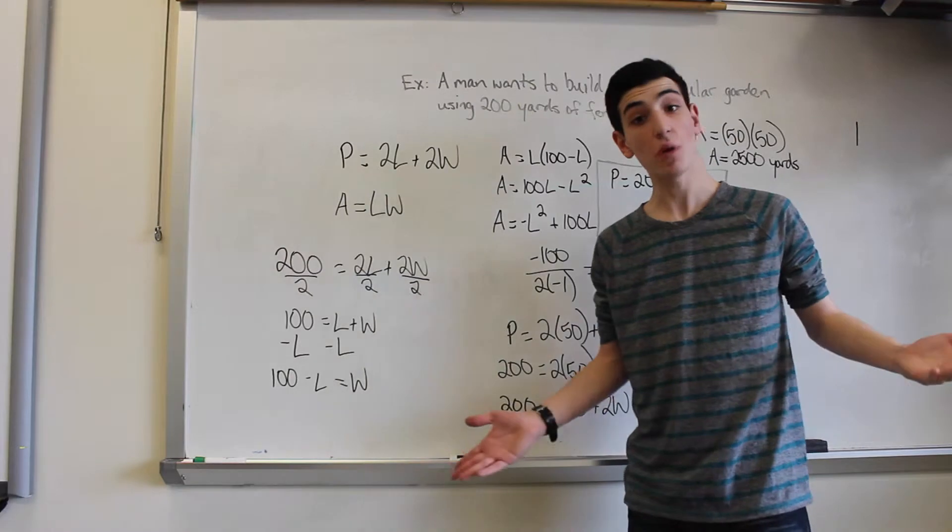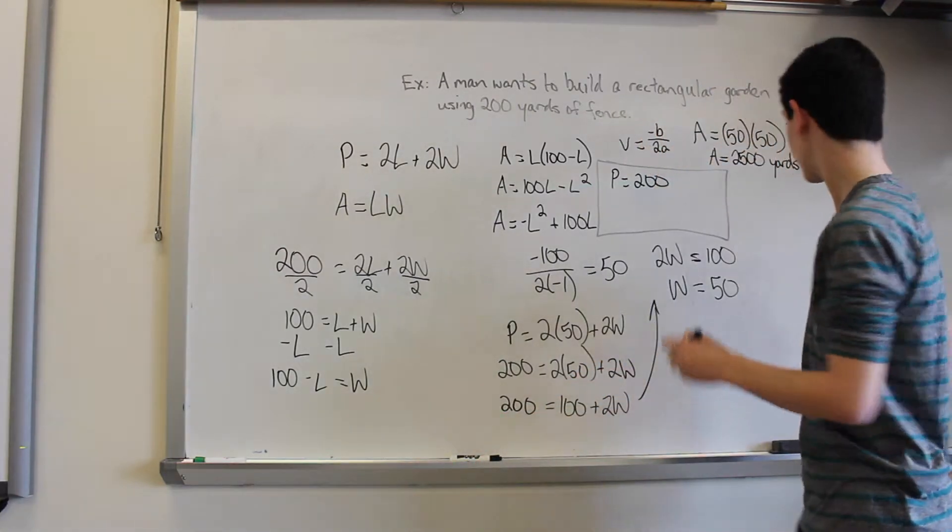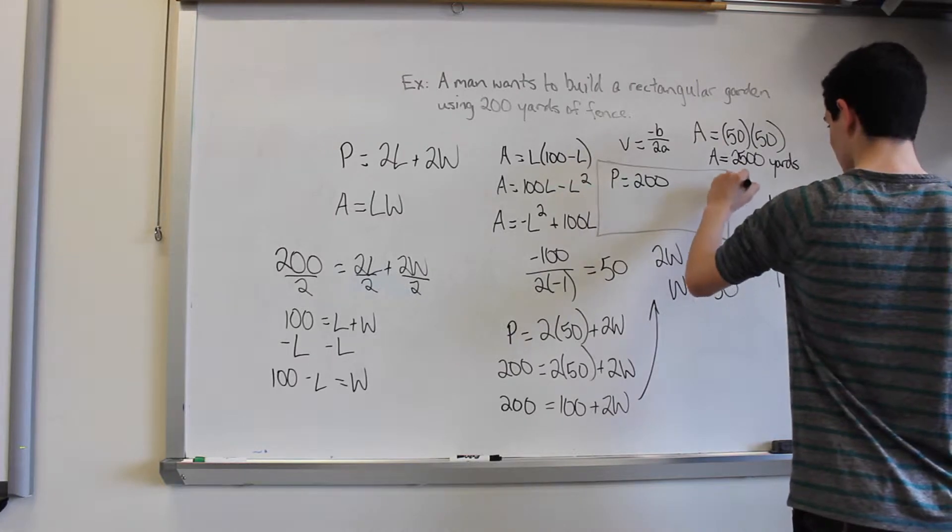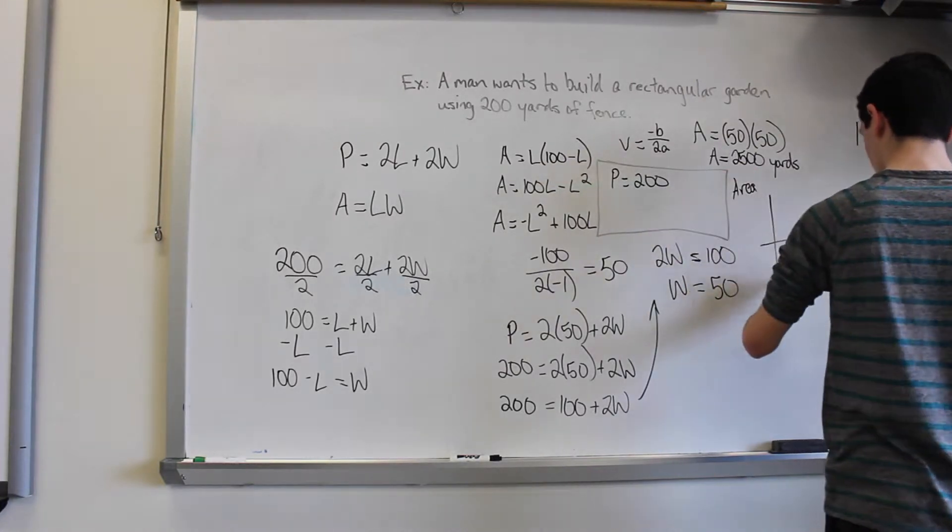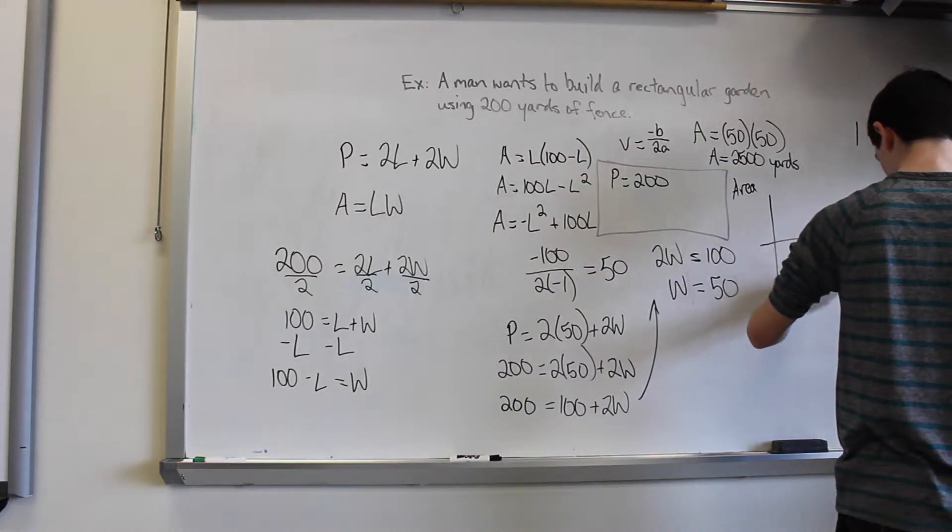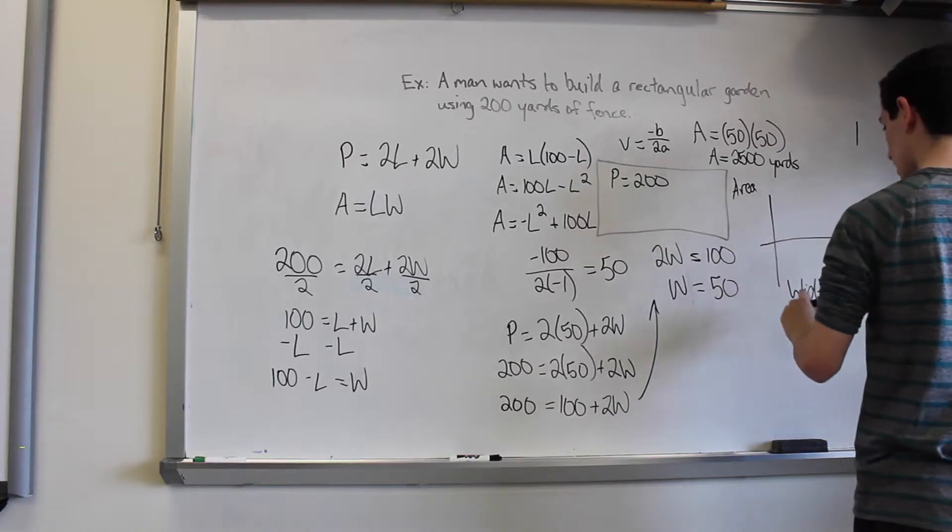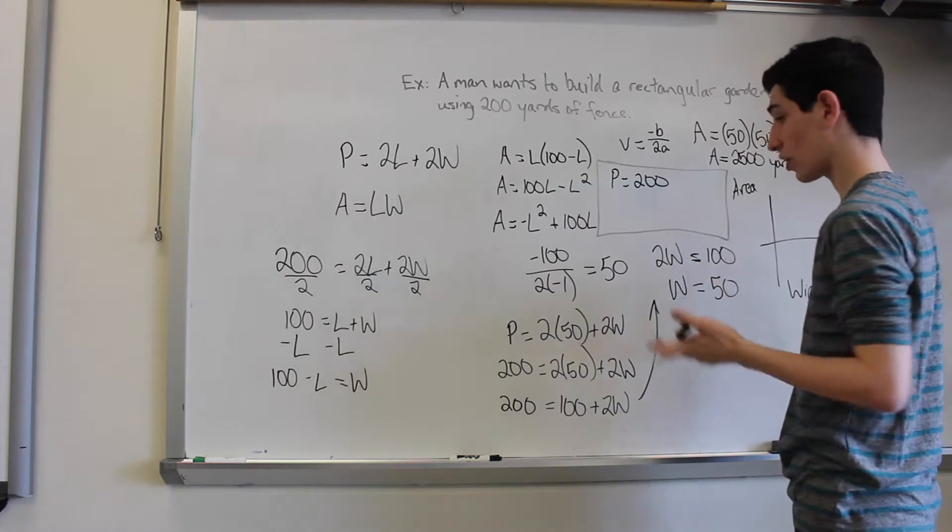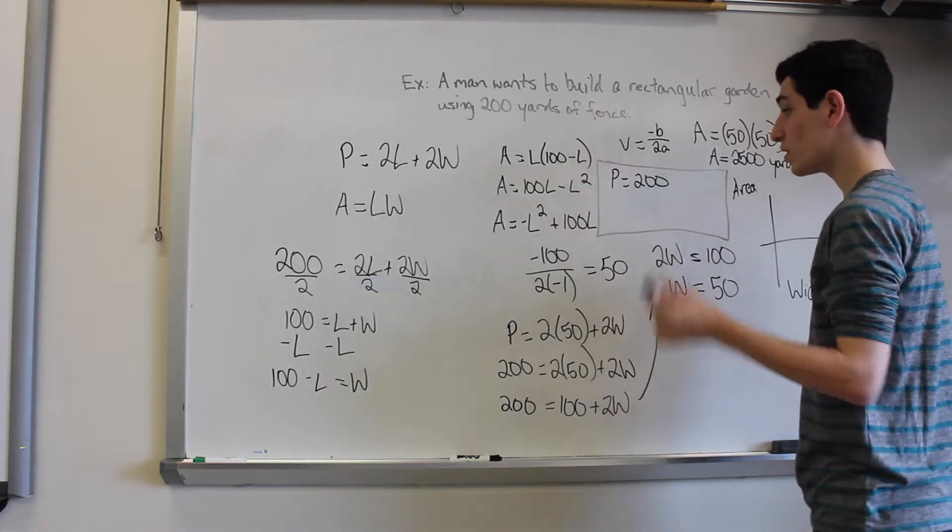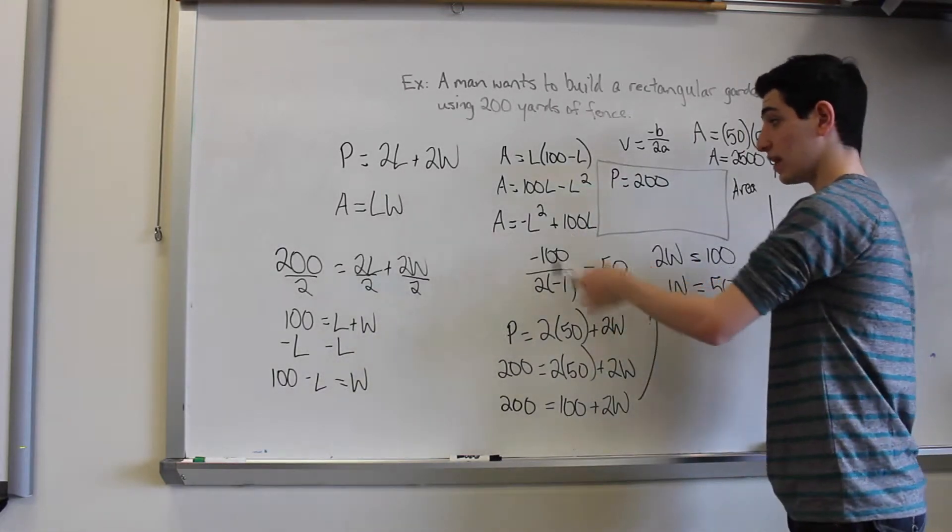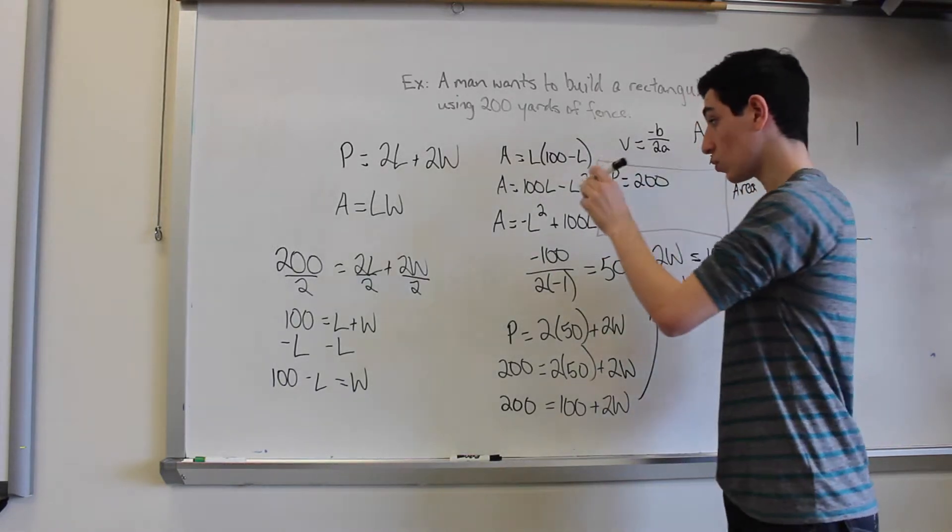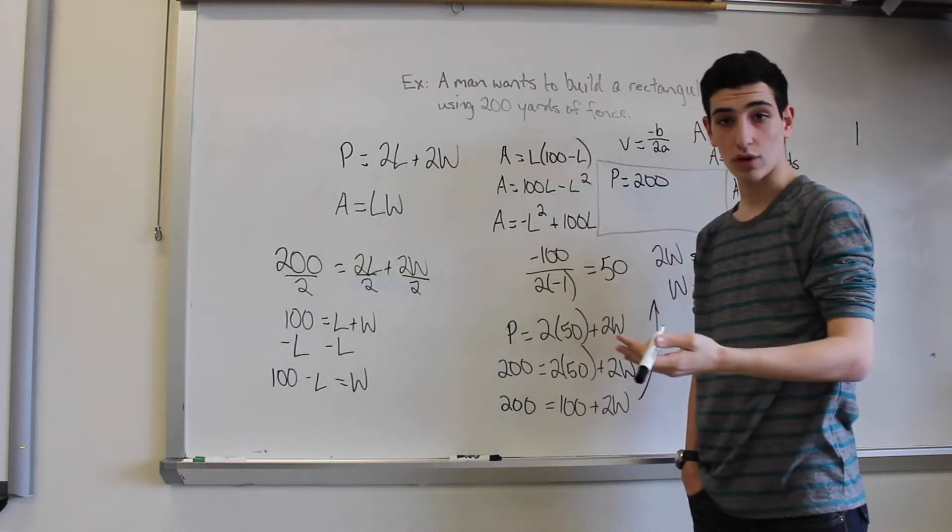Now, we're pretty much done. But if we wanted to, we could also graph it. We take our Cartesian plane. We'll make the y-axis area and the x-axis the width for all intents and purposes. And we already know a lot just from what we found regarding our graph. We know that we have a quadratic equation with a negative x. So that means that we have a parabola that's downward facing.